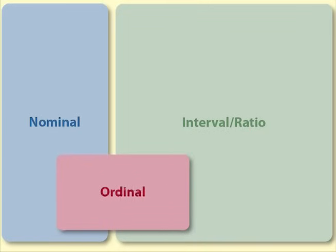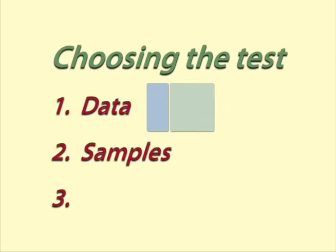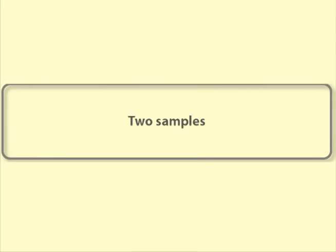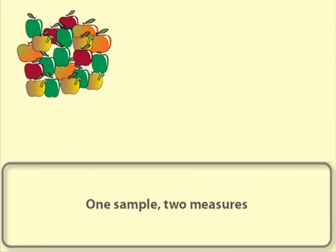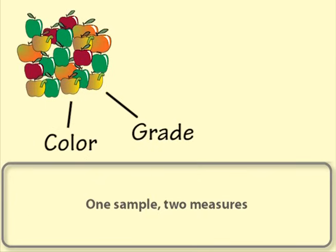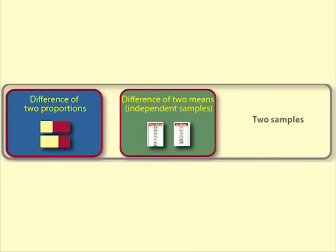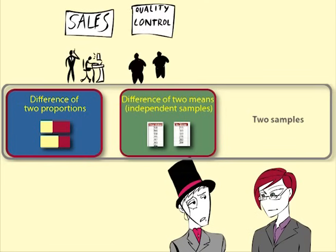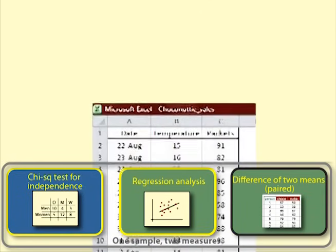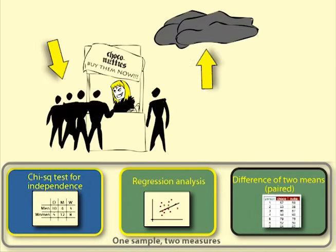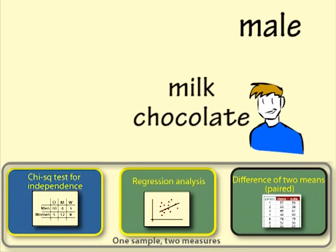Ordinal data can be classified with nominal or interval ratio depending on the circumstances. Question 2: Samples. We ask how many samples are involved. Is there one sample for which we are testing the relevant statistic against a hypothesized value? Or are there two samples being compared with each other? Or is there one sample but each observation has a measure or score for more than one variable — the same sample is measured twice? If we have two sets of information on the same people or things, we would say we have one sample with two variables.